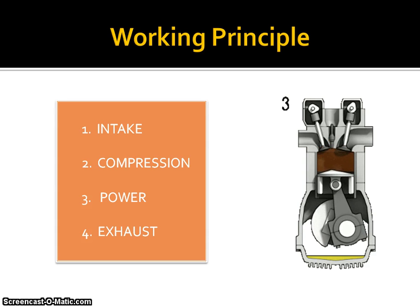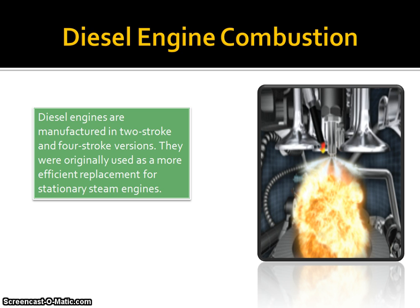Diesel engines come in two-stroke and four-stroke variants. They were originally used as a more efficient replacement, used in locomotives, heavy equipment, and electric generators. In the 1970s, the use of diesel engines expanded in various on-road and off-road applications.